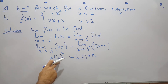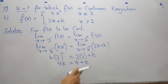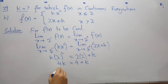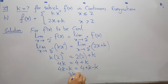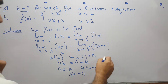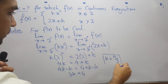Applying the limit: 2 squared is 4 so on the left we have 4k, and on the right we have 4 plus k. Subtracting k from both sides gives 4k minus k equals 4, so 3k equals 4, and dividing both sides by 3 gives k equals 4 over 3.